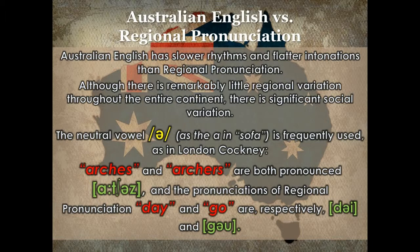The neutral vowel schwa, as the 'a' in sofa, is frequently used, as in London Cockney. Arches and archers are both pronounced /ɑːtʃəz/, and the pronunciations of RP 'day' and 'go' are respectively /dəɪ/ and /gəʊ/.